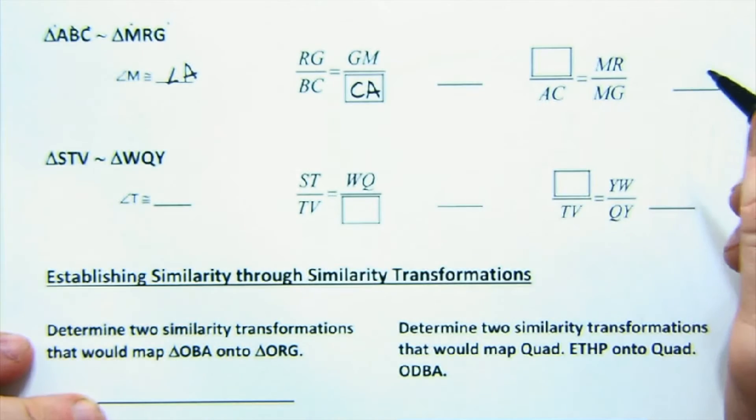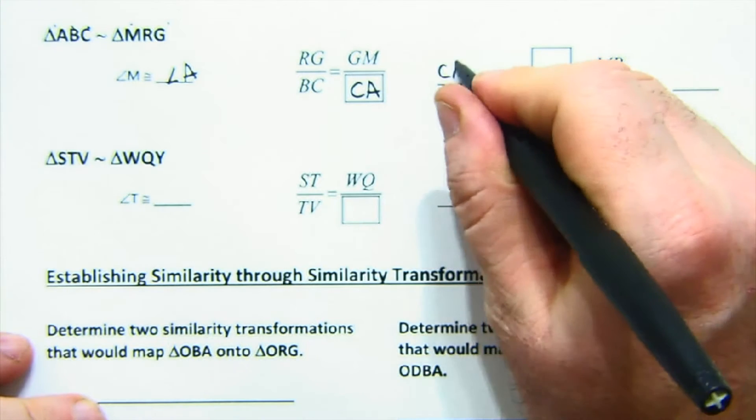But in terms of sides, we could say that RG is to BC as GM is to CA. Just again, follow the pattern, right? It would be CA would be our answer there.